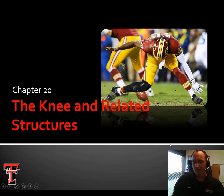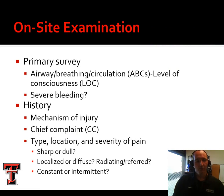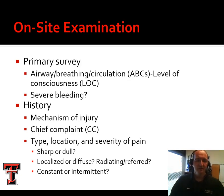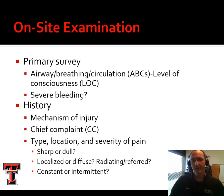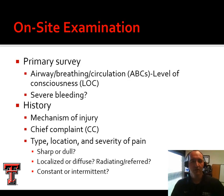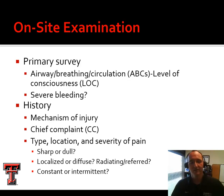We're going to take a look at a number of these injuries, and just like before, we're always going to rule out immediate threats to life. The primary survey comes first: airway, breathing, circulation, level of consciousness, severe bleeding. It's going to be really rare that a knee injury involves an immediate threat to life, but the concern is whether there's a knee injury in addition to an immediate threat to life. We'll see this sometimes in the case of a car accident — they slam into the dashboard, sustain a PCL injury, but have other more pressing issues. We don't want to treat the limb at the expense of the life.